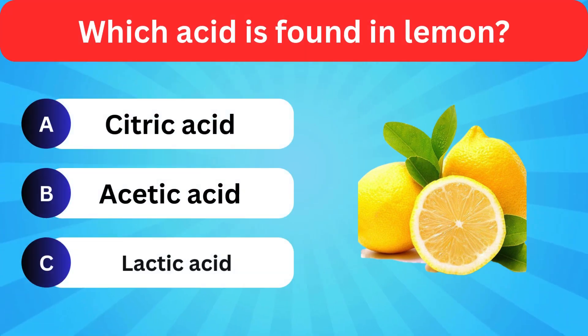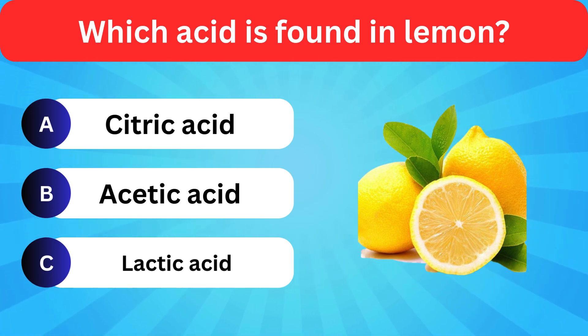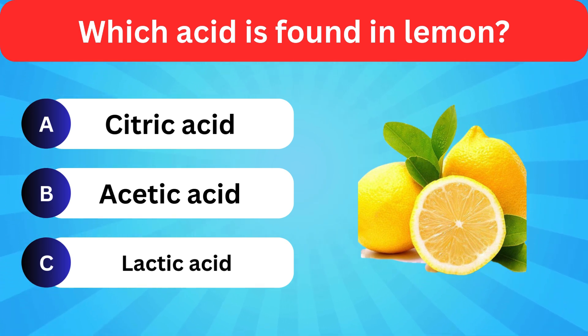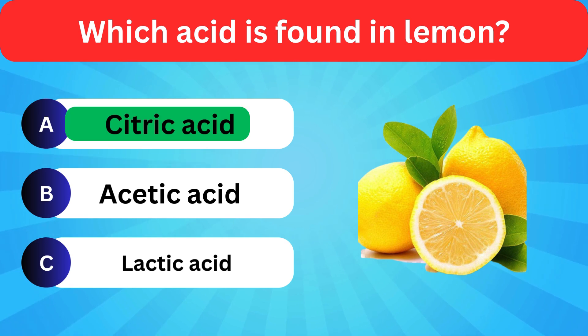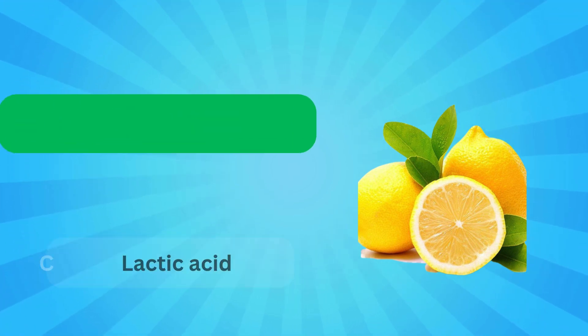Which acid is found in lemon? Options: Citric acid, Acetic acid, Lactic acid. Correct answer is citric acid.